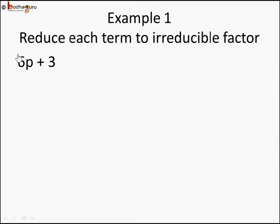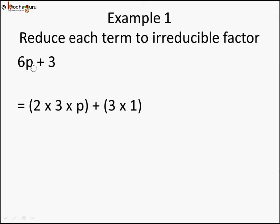First we need to see how we can break each term into its factors. Start with 6p — put a bracket. 6 can be represented as its factors: 2 into 3. So 6p is 2 into 3 into p. If you reverse it, 2 into 3 is 6, and 6 into p is 6p. And 3 is simple — we can write 3 or 3 into 1. This is the first step where we take each term and reduce it to its irreducible form.